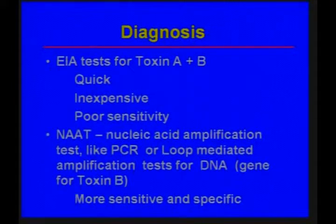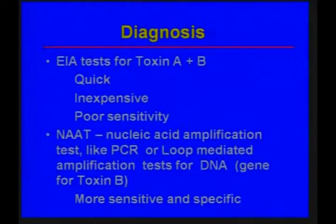I want to talk briefly about diagnosis because we don't have perfect diagnostic tests yet, even though we recognized Clostridium difficile in 1975 or 76. Many hospitals use enzyme immunoassay tests for toxin A and B. The reason they use them is because they're quick — you can get an answer within a few hours — and they're not very expensive, but the downside is that they are not very sensitive and specific.